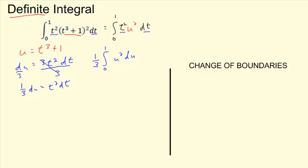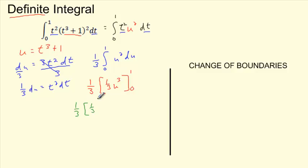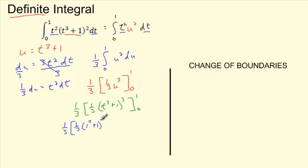That was like what we did last section. Now we're going to evaluate this. Leave the 1/3 out front and integrate: bump u squared up to u cubed, divide by 3, so it's 1/3 u cubed, evaluated from 0 to 1. We can't evaluate yet until we substitute the x's back in. So u is really t cubed plus 1, and all of that is cubed. Now I can evaluate from 0 to 1. I've got 1/3 times (1 cubed plus 1), all of that cubed as the first chunk. Then minus, plugging 0 in for t: 0 cubed plus 1, the whole thing cubed.